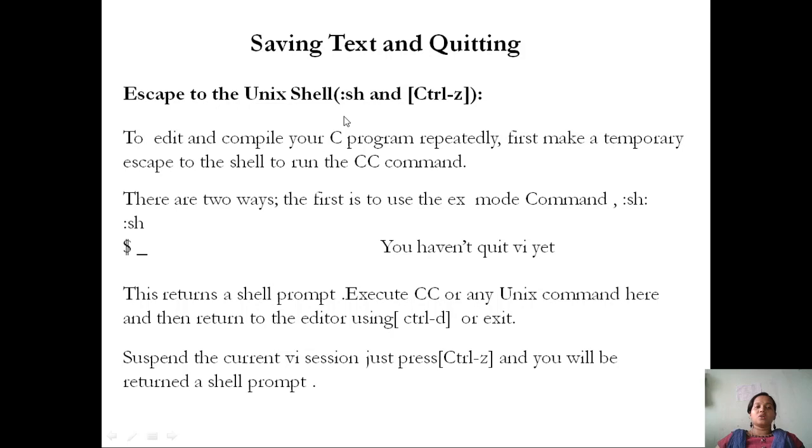Escape to the Unix shell. To edit and compile your C program repeatedly, first make a temporary escape to the shell to run the CC command. There are two ways. First is to use the ex mode command, that is colon sh. You haven't quit Vi yet. This returns a shell prompt. Execute CC or any Unix command here and then return to the editor using Ctrl D or exit.